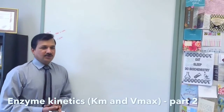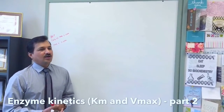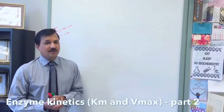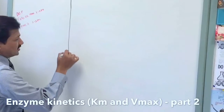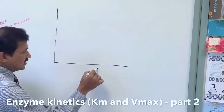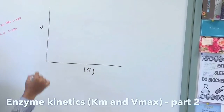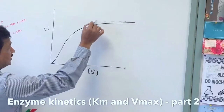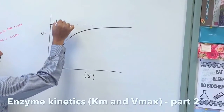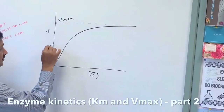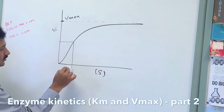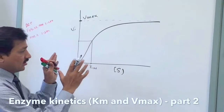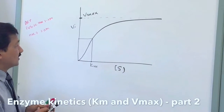Let me explain how to calculate Km and Vmax, or how to solve problems related to Michaelis-Menten kinetics. In my previous video I explained what Km and Vmax are. On this graph, the x-axis is substrate concentration and the y-axis is initial velocity of the reaction. At a fixed enzyme concentration, increasing substrate concentration causes velocity to reach a saturation point called Vmax. Half of Vmax is interpolated to the curve and then to the x-axis — that point is called Km.